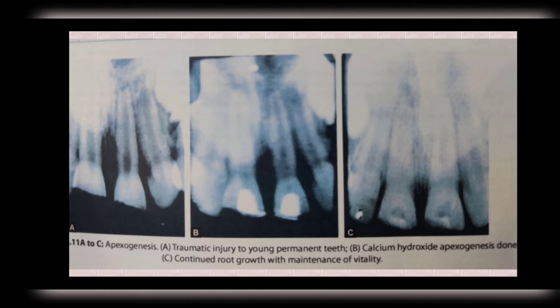This figure shows apexogenesis: the first picture shows traumatic injury to young permanent teeth, the second shows calcium hydroxide apexogenesis being done, and the third demonstrates continued root growth with maintenance of vitality.